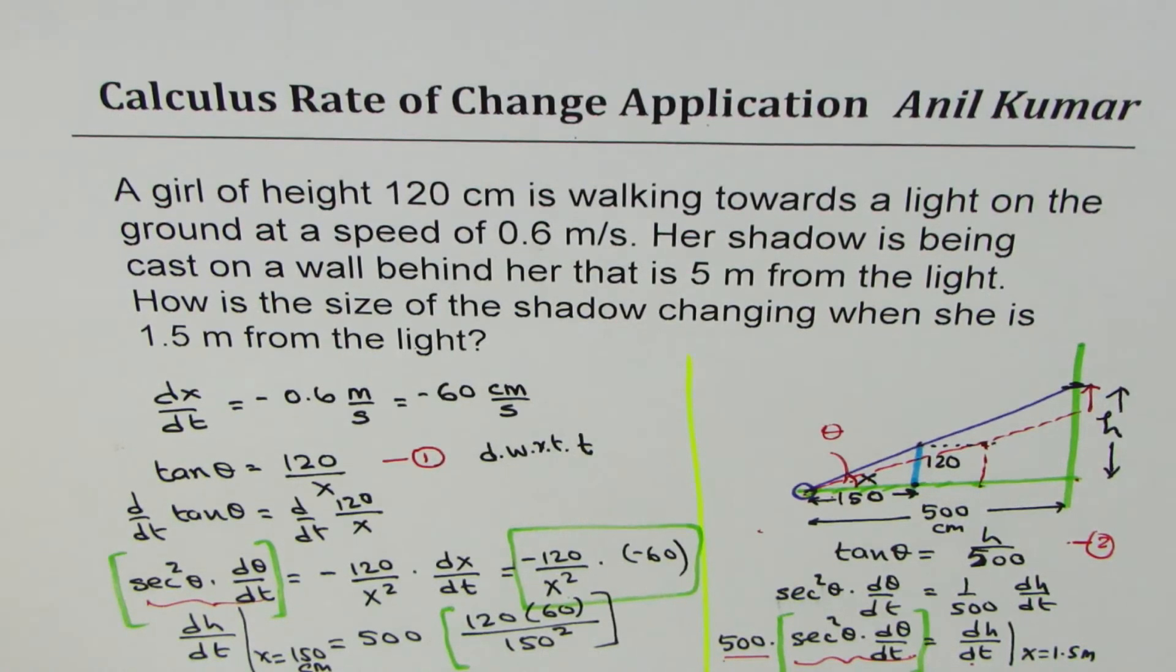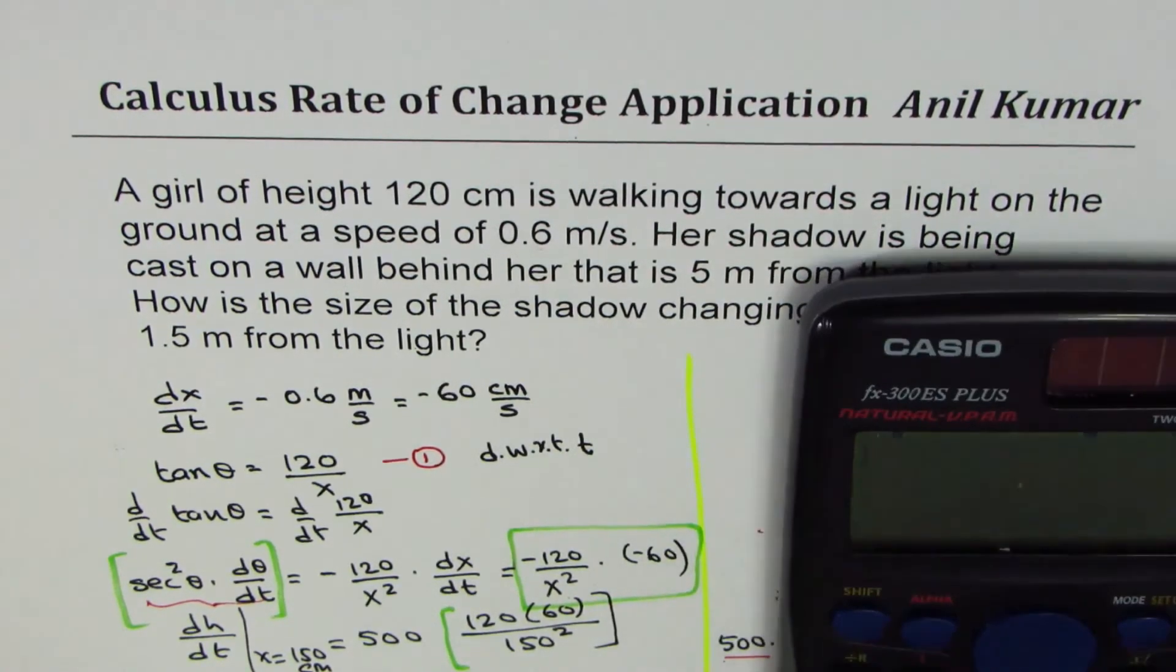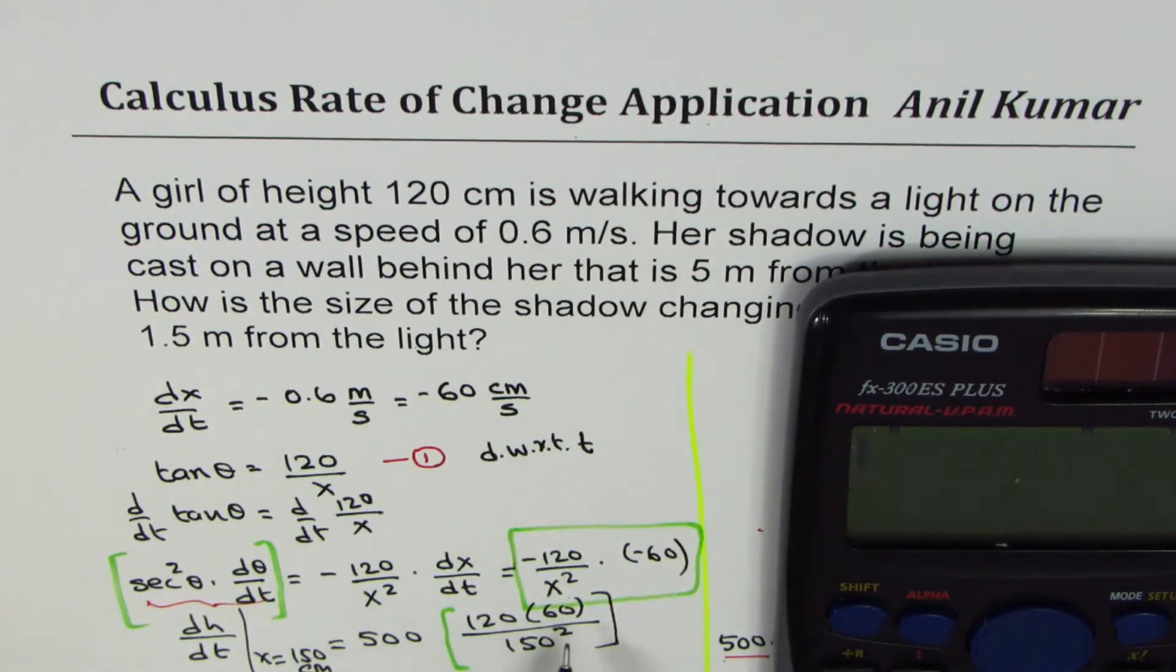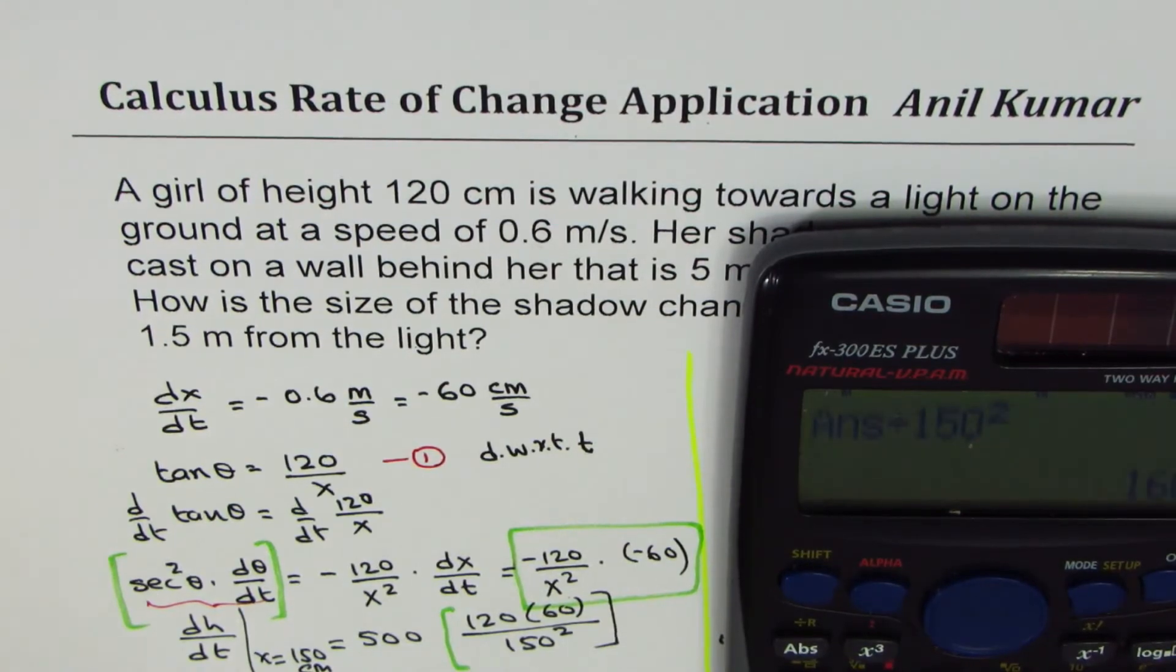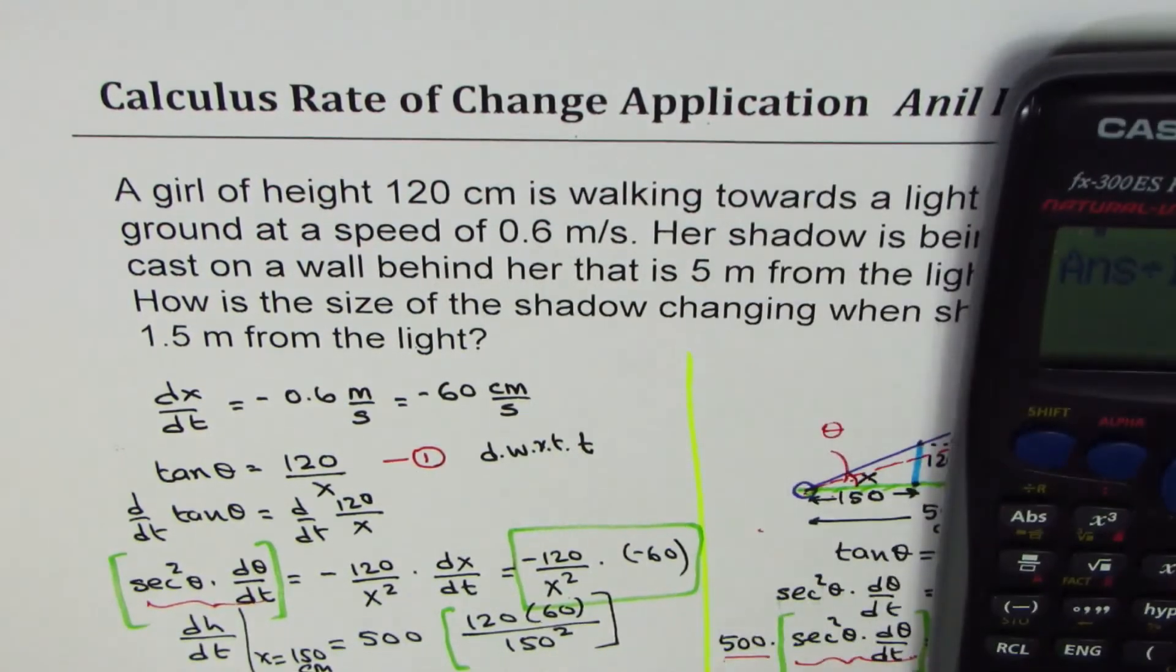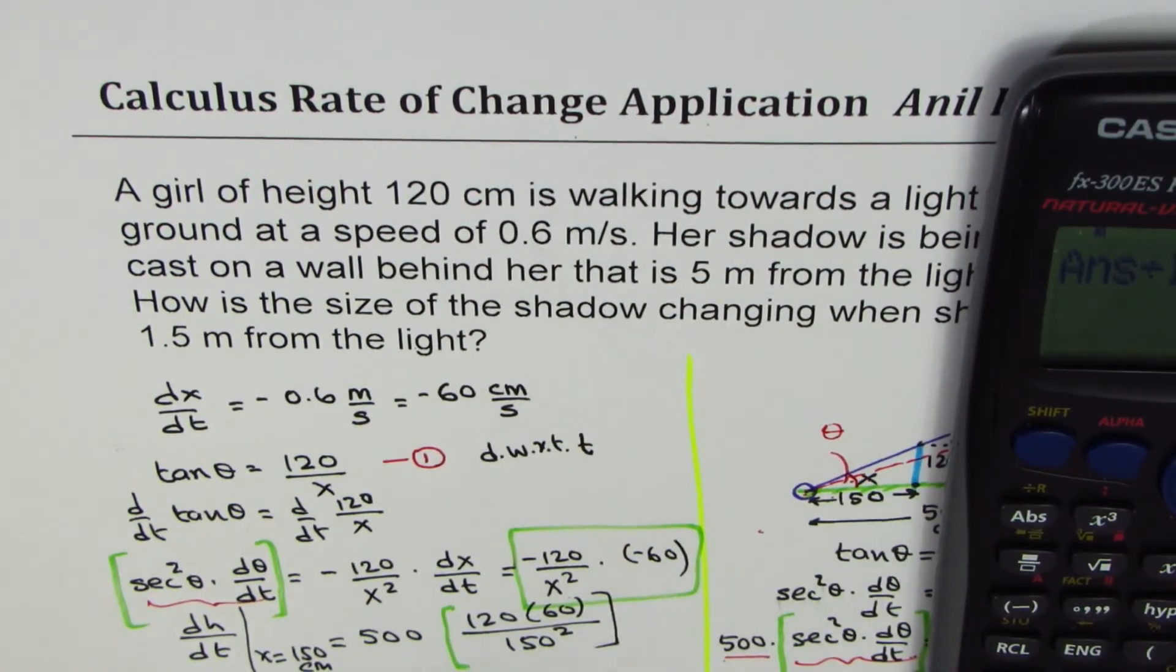So that's why you could always adopt this solution. It's very neat way of doing it. Let's calculate this number. Use calculator. So we have 500, let's multiply times 120 times 60. All this divided by 150 square. And that gives us 160. So we get this as 160.